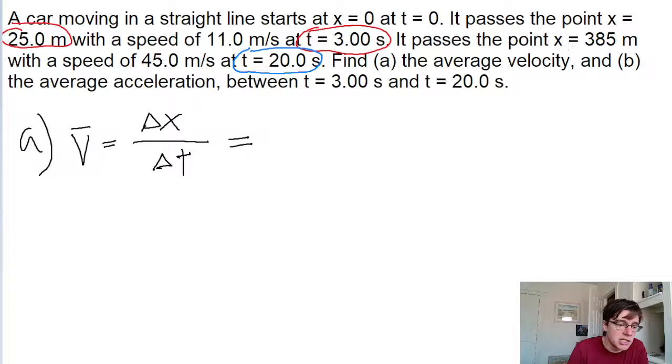we have a position at x equals 385 meters. So the final position is 385 meters. We subtract: 385 meters minus 25 meters divided by the change in time, which is 20 seconds minus 3 seconds.